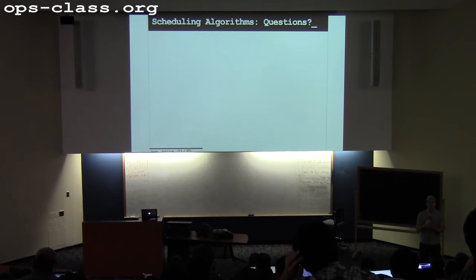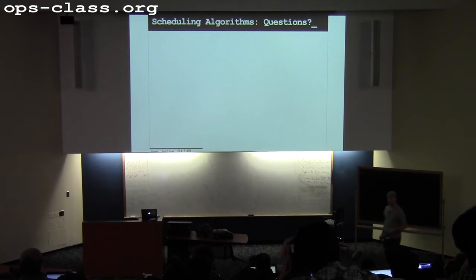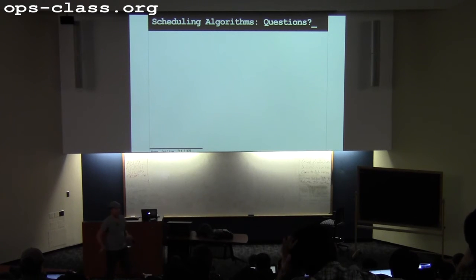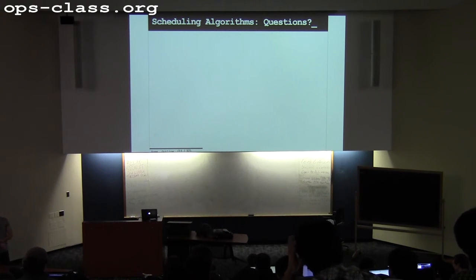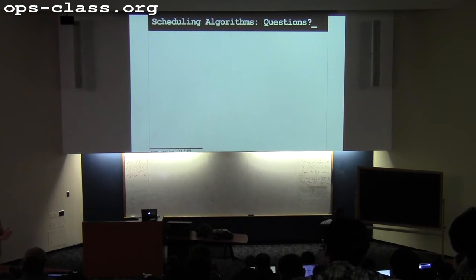To review the scheduling algorithms so far: we've talked about two very simple algorithms — round robin and random — one algorithm that can predict the future, which was shortest job first, and then a reasonably practical approach to prioritizing interactive work, which was MLFQ.